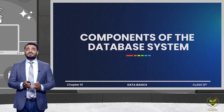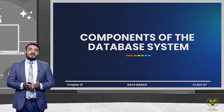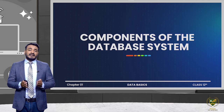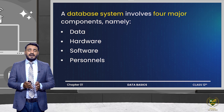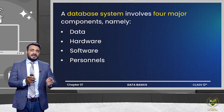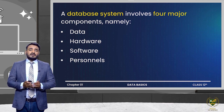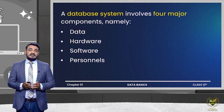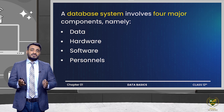A database system is made up of certain components — without those components, the database system cannot be built and would be incomplete. As you can see on your screen, the components are: data, hardware, software, and personnel. These are the four basic components without which the database system is incomplete, and if we want to build a database system, we need all four of these major components.